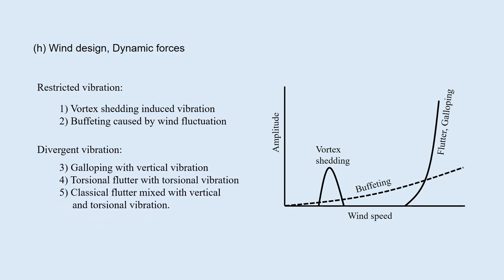In the divergent vibration, the amplitude of the girder sharply increases at high wind speed and it diverges, which often cause catastrophic failure. It includes galloping with vertical vibration, torsional flutter with torsional vibration, the classical flutter mixed with the vertical and torsional vibration.